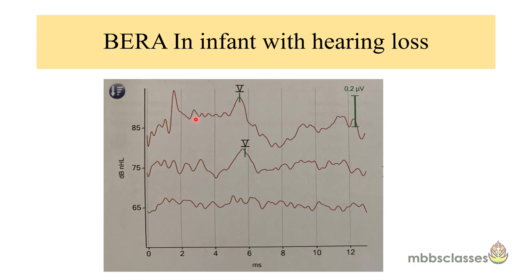Here you can see a BERA in an infant with a hearing loss. The recording is started at a maximum intensity of 85 dBNHL. Here you can see we are getting wave 1 and wave 5, and the last prominent wave 5 is obtained at 75 dBNHL, meaning the hearing threshold is too high. This is how BERA can help us in identifying infants with hearing loss.